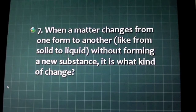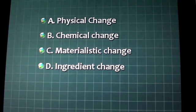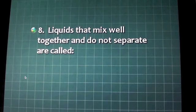When a matter changes from one form to another, like from solid to liquid, without forming a new substance, it is what kind of change? A. Physical change, B. Chemical change, C. Materialistic change, D. Ingredient change.